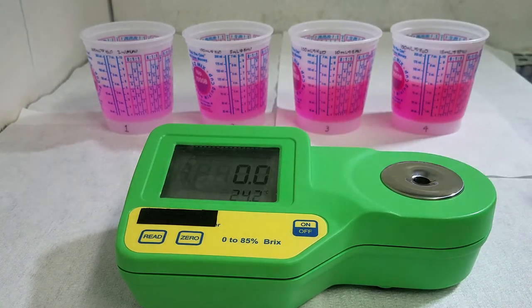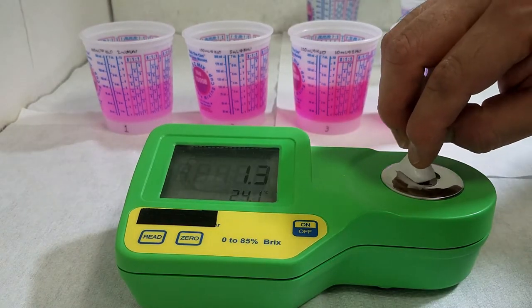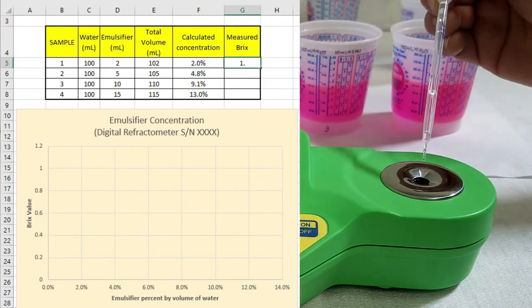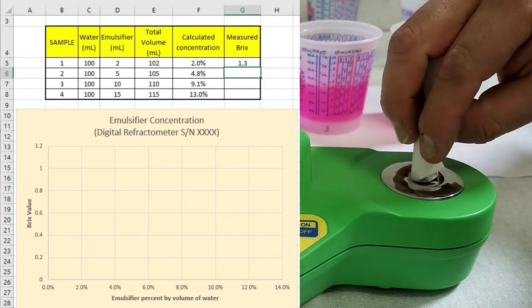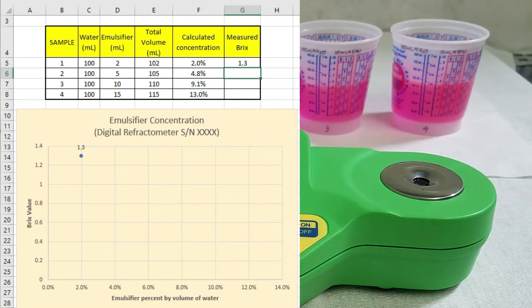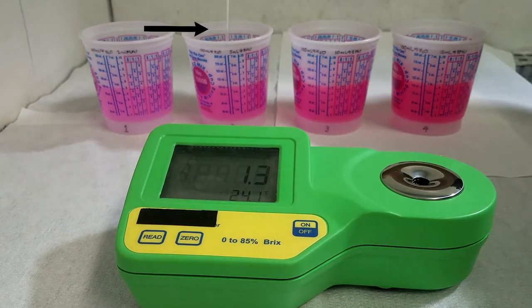Using a different and clean pipette, we are going to take the first sample and we are going to get, by pushing the read key, the value of 1.3. Feeding this value into the Excel sheet attached to this video, we are going to get the first chart point.